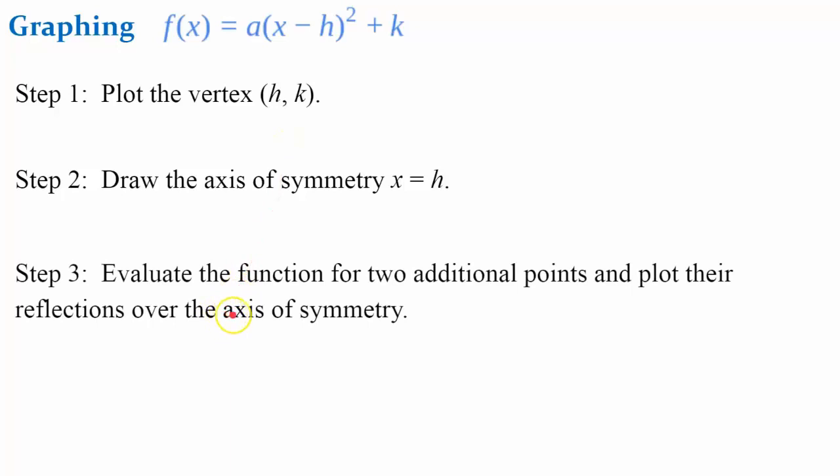Then evaluate the function for two additional points and plot the reflection. Select any two inputs and then evaluate for your ordered pair. And step four, draw a smooth curve through your points.